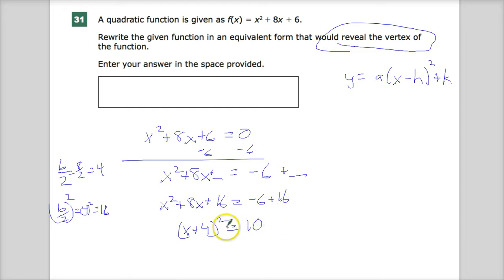Negative 6 plus 16 gives you 10. And if I get everything on the same side, so I'll subtract 10 from both sides, x plus 4 squared minus 10 equals 0. So if I set it up in this form, that's how I'd find solutions. I can just make this a y if I was going to graph it, and then I'd be good to go.